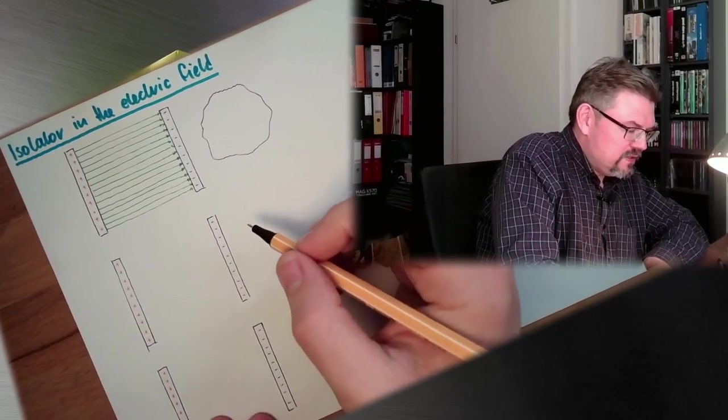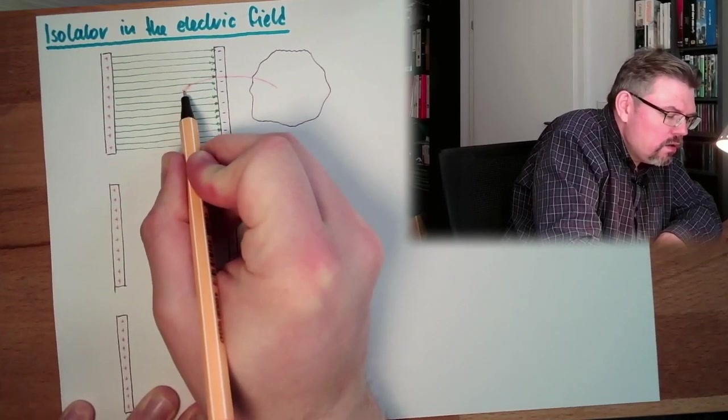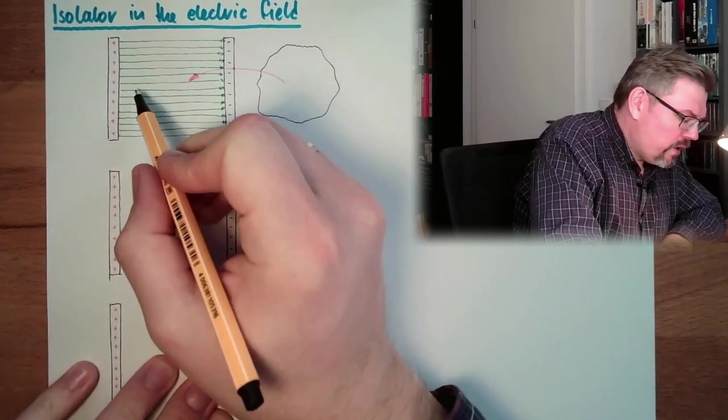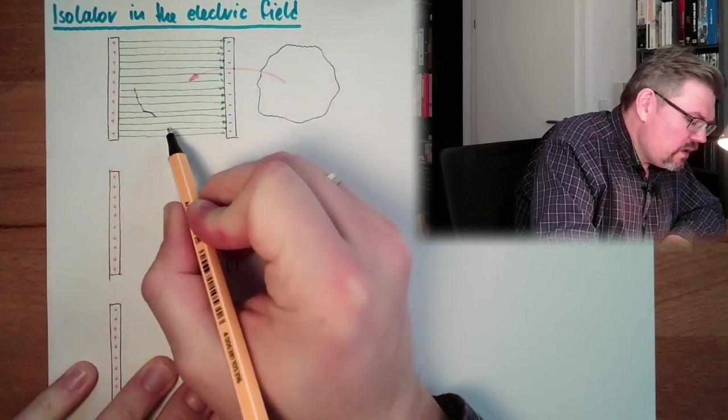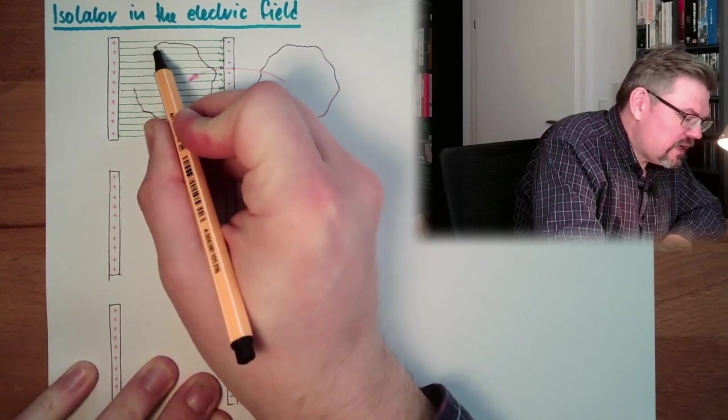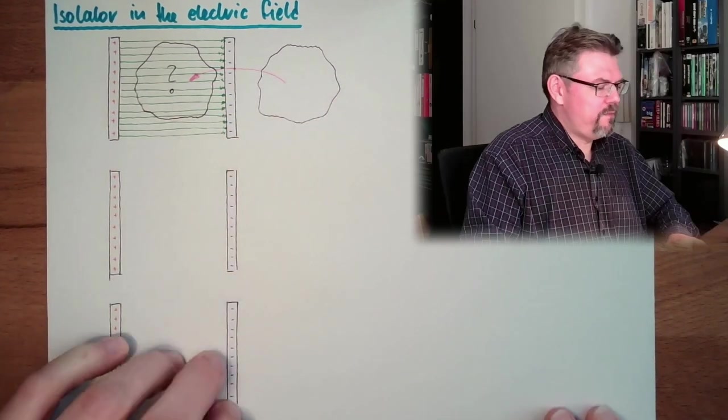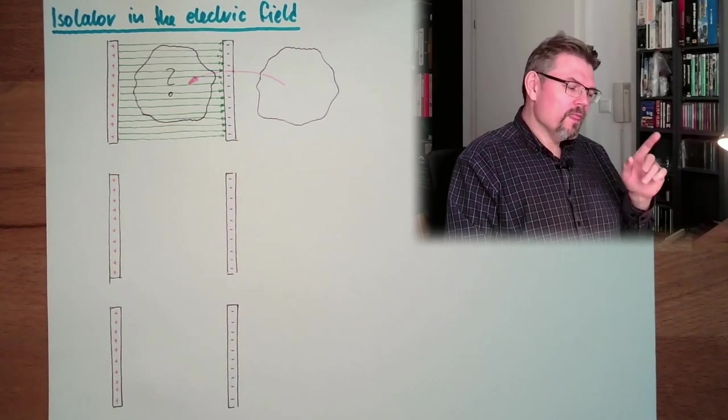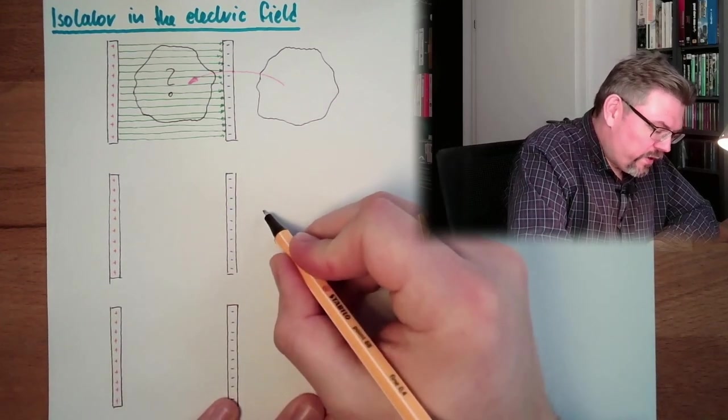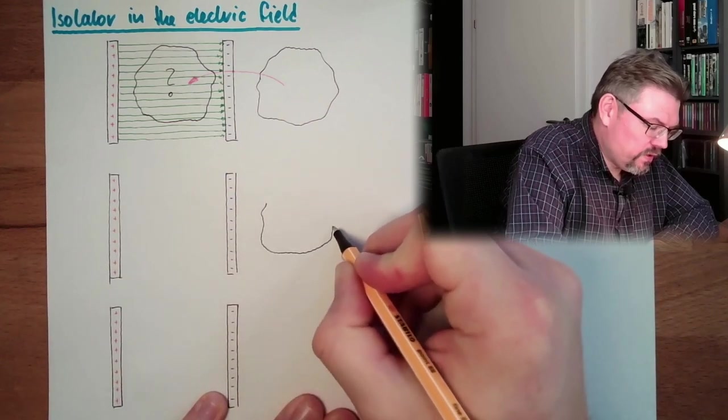We are going to place this material inside here. So we put this inside here and we think about what is happening if this thing is here inside. What is happening there? Well, let's draw it once again here.